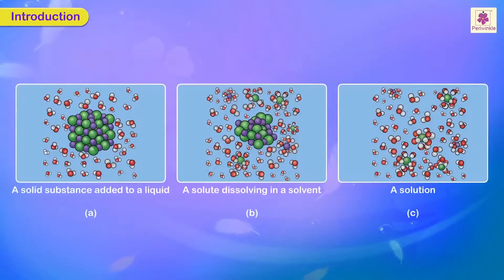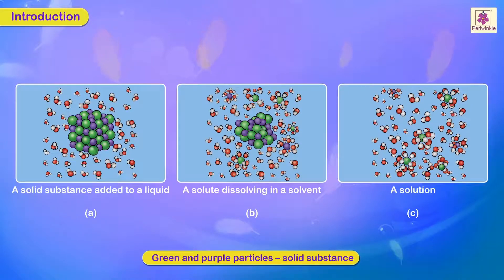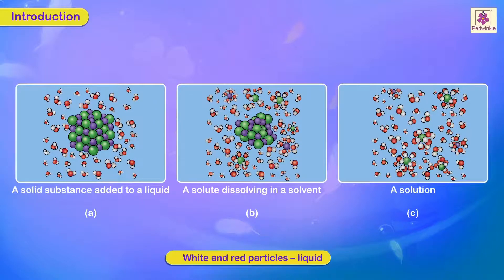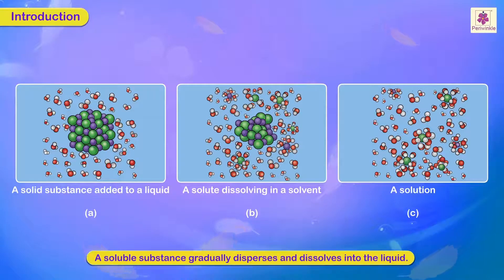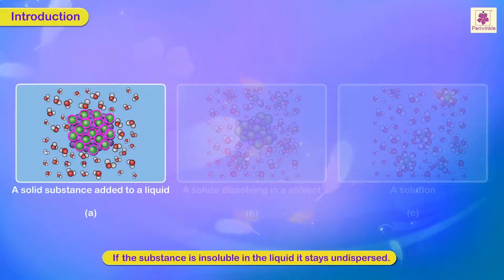Let us understand what happens when a soluble or insoluble substance is mixed in water. In the given diagrams, the green and purple particles represent the solid substance being mixed into the liquid represented by white and red particles. Diagrams B and C show how a solution is formed — a soluble substance gradually disperses and dissolves into the liquid. If the substance is insoluble, it stays undispersed, as shown in diagram A.